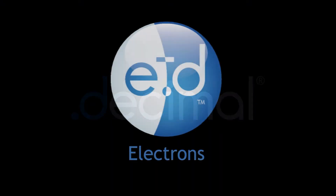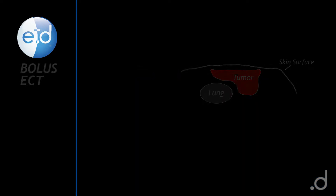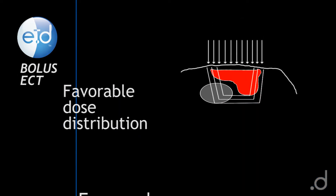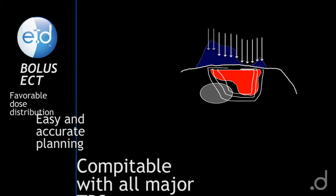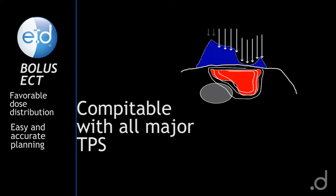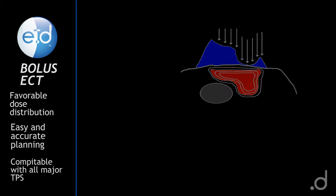Bolus Electron Conformal Therapy, or Bolus ECT, uses a single electron beam with a variable thickness bolus to shape the 90% isodose line to conform to the distal edge of the tumor. Bolus ECT creates favorable dose distributions for certain tumors.